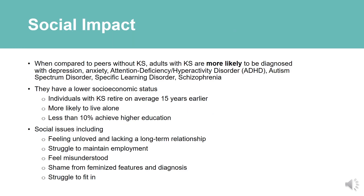When compared to peers without KS, adults with KS are more likely to be diagnosed with depression, anxiety, attention deficit hyperactivity disorder (ADHD), autism spectrum disorder, specific learning disorders, and schizophrenia. They also tend to have a lower socioeconomic status, as evidenced by individuals with KS retiring on average 15 years earlier than their peers, being more likely to live alone, and less than 10% achieving higher education.